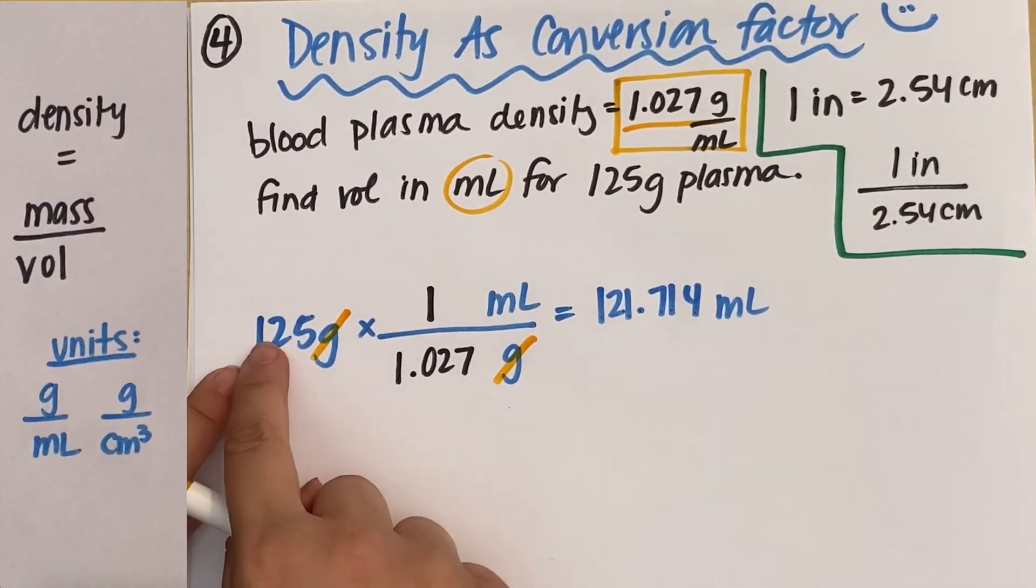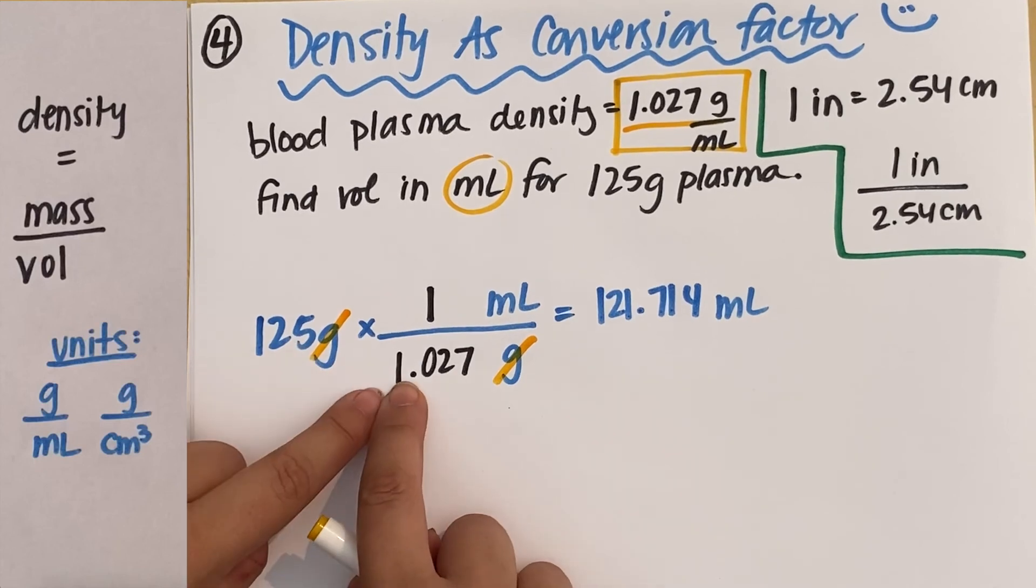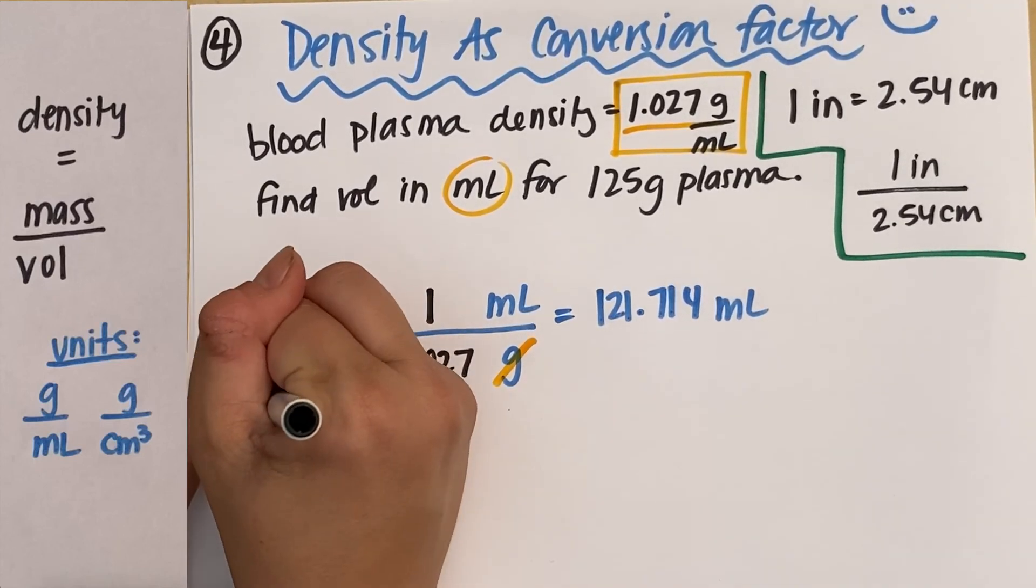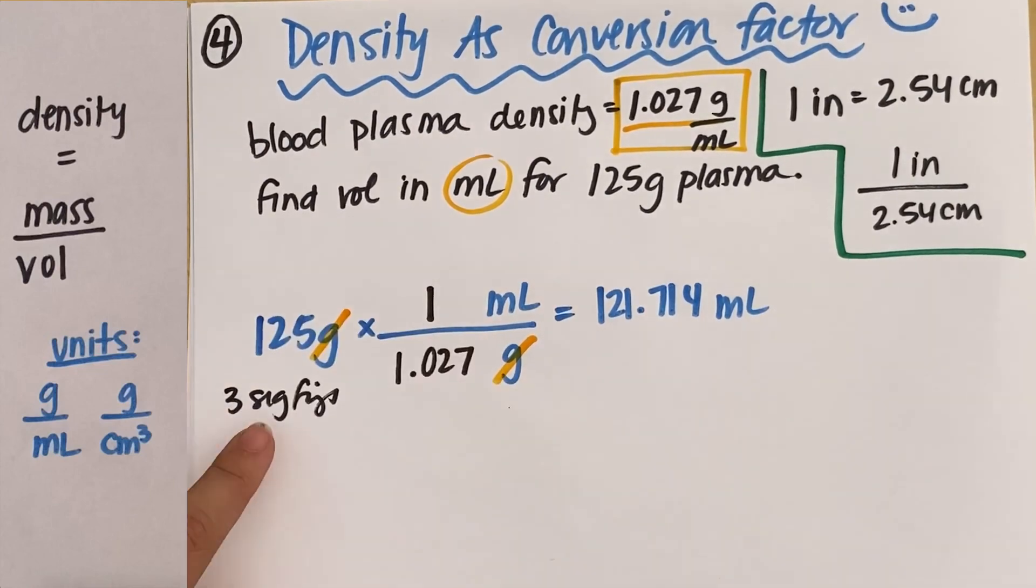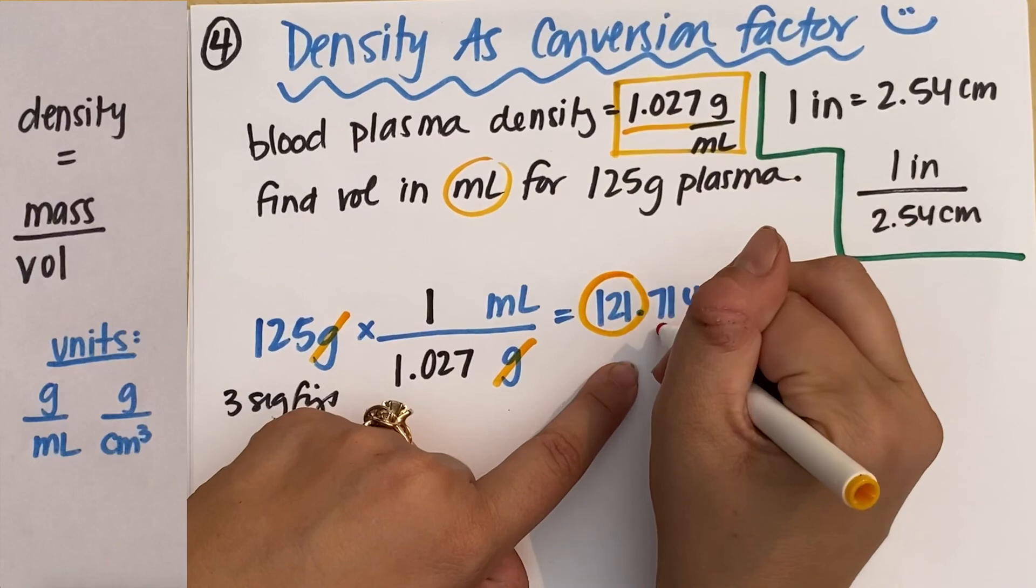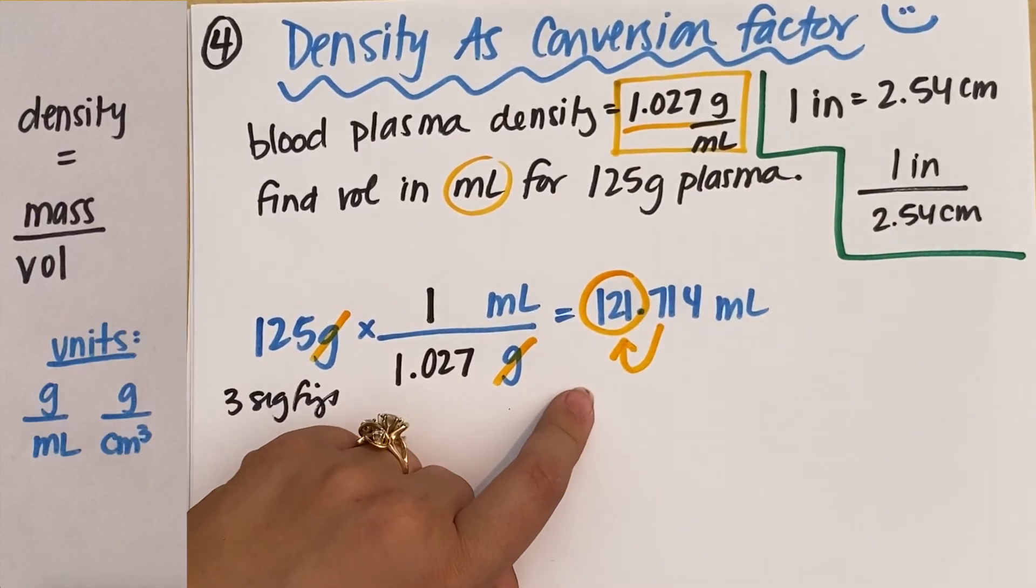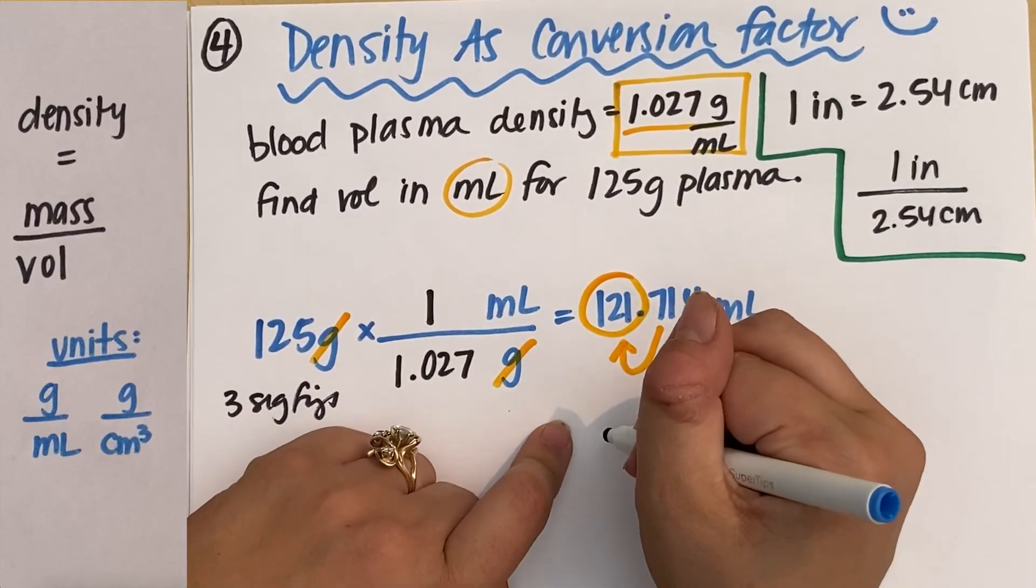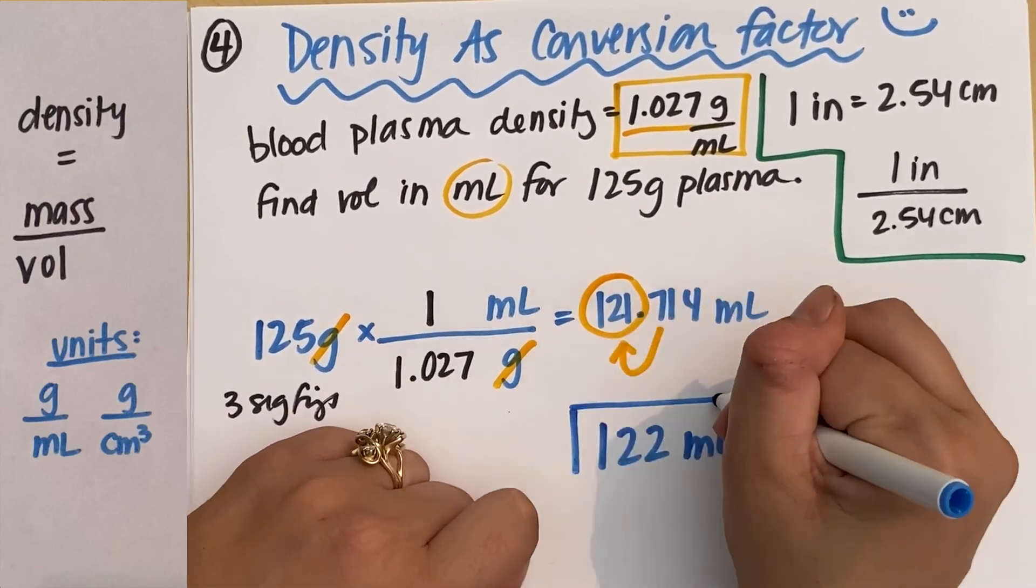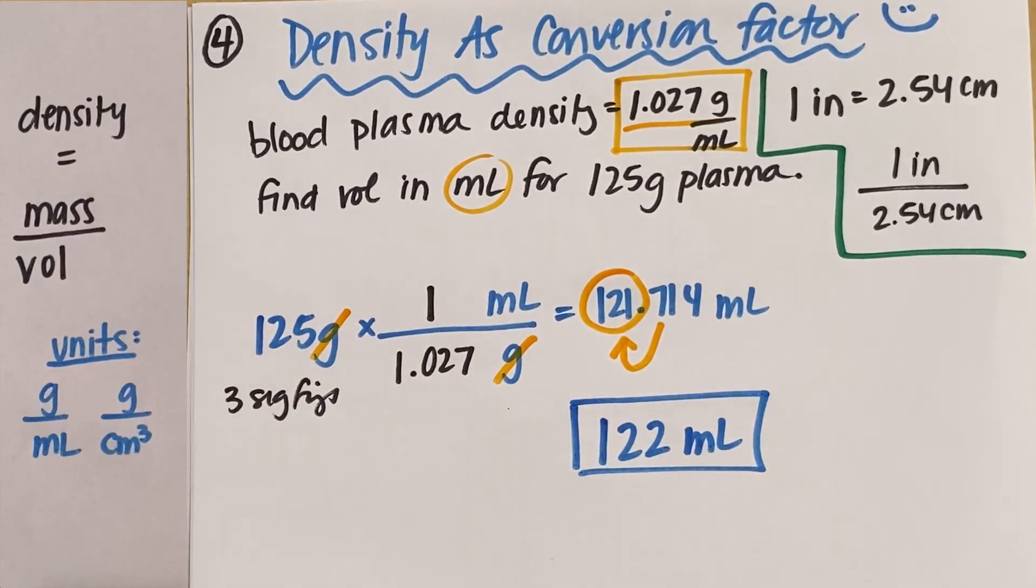And of course I can't keep this. I have three sig figs here, four sig figs here. So three sig figs is the most that I can have. So one, two, three, and the seven does make the one round up. So my total answer would be 122 milliliters of blood plasma. That's it. Lots of density questions. Hopefully that helps.